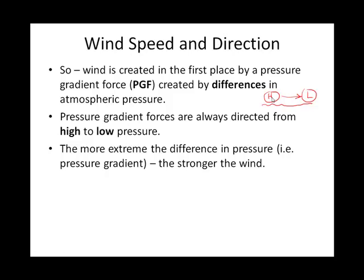The more extreme the difference between high pressure and low pressure, the faster the wind will blow. You could do a subtraction to find the change in pressure — the stronger that difference, the stronger the wind. This is indicated by tight isobars on a barometric map. Loose or widely spaced isobars indicate a gentle pressure gradient and calm winds.